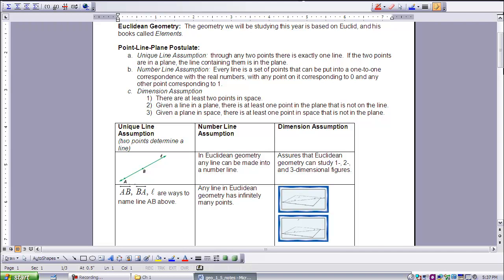The third part is the dimension assumption. There are at least two points in space. Given a line in a plane, there's at least one point in the plane that is not on the line. And given a plane in space, there is at least one point in space that is not in the plane.